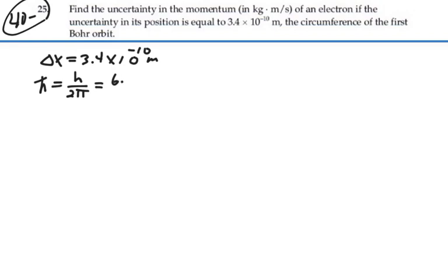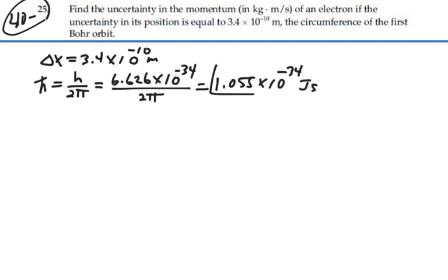That's going to be 6.626 times 10 to the minus 34 divided by 2 pi. And that's equal to 1.055 times 10 to the minus 34 joule seconds. We're going to use that a lot so we just wanted to have that in mind.